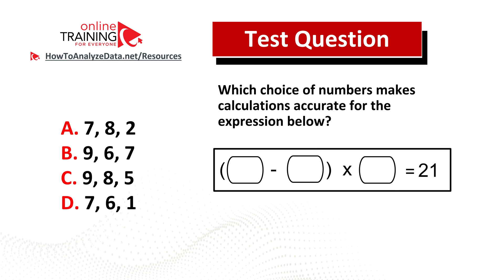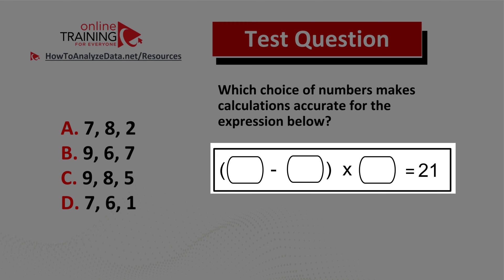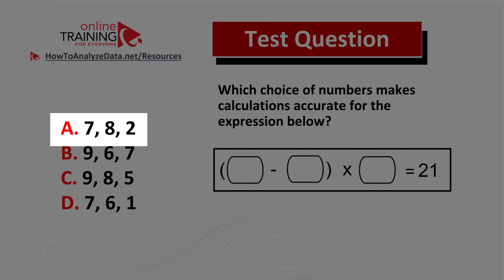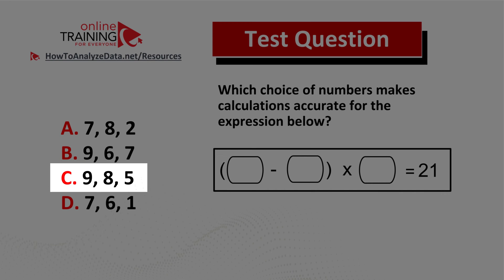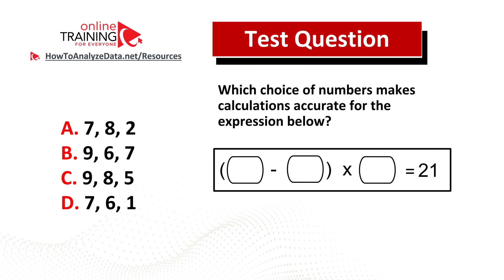Let's look at an interesting problem which tests your ability to do mental math. Which choice of numbers makes calculations accurate for the expression below? You have an expression with two numbers in parentheses — the second number subtracted from the first — multiplied by a third number, with the result equal to 21. The four choices are: choice A seven eight two, choice B nine six seven, choice C nine eight five, and choice D seven six one. You cannot use a calculator. Do you think you know the answer? Now might be a good time to pause this video.